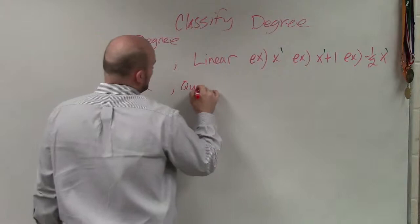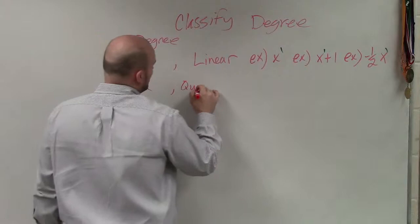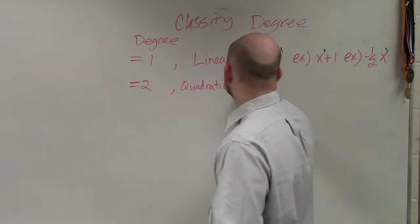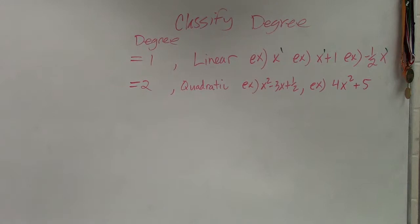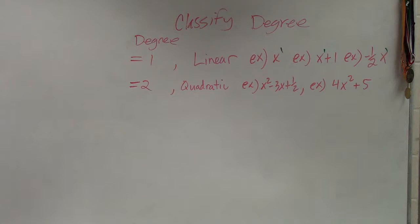If you have a degree that's equal to 2, that's what we call a quadratic. And you guys should be very familiar with quadratics. It could be x squared minus 3x plus 1 half. It could be 4x squared plus 5. The main important thing, again, is that you guys identified that the degree of my polynomial is equal to 2, right? The largest exponent up there is 2.